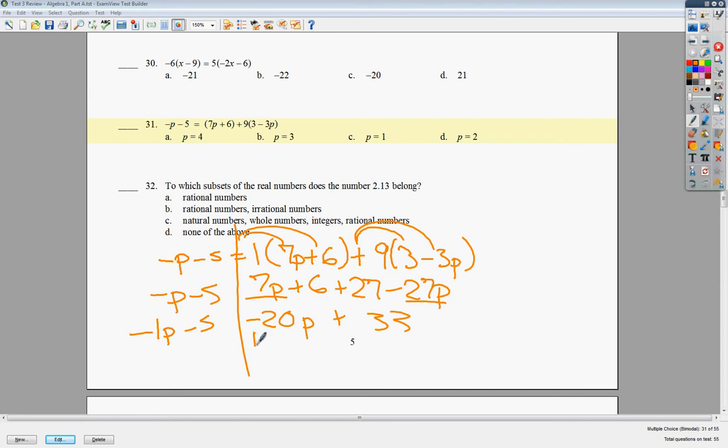So I'm going to do 7 minus 27 and get negative 20p. And then I'll do 6 plus 27, which should give me positive 33. Now I'm going to put all my variables together. I'm going to add 20p to both sides. This should give me 19p minus 5 is equal to 33. To get rid of minus 5, I need to add 5.